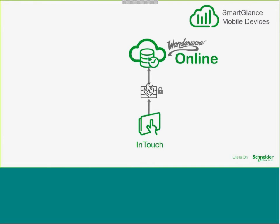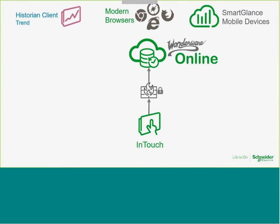Let's look at how this is all put together. When Wonderware Online was originally put in service, InTouch was the primary data provider. The clients included Historian Client Trend, modern HTML5 browsers — Internet Explorer, Edge, Chrome, Safari, Firefox — and SmartGlance mobile devices. We also had the Wonderware Historian as a tier-one historian pushing data to Wonderware Online.